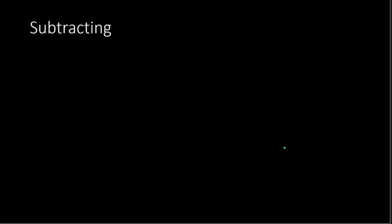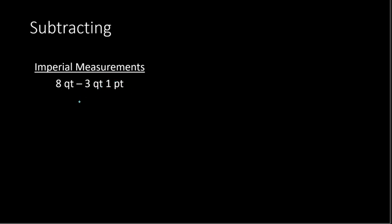Next we're going to work with subtraction. We'll do an example with imperial measurements and then one with metric. For imperial, we're starting with 8 quarts minus 3 quarts 1 pint. With subtraction, we need to subtract like units — quarts with quarts and pints with pints. The problem is we have 0 pints minus 1 pint, which doesn't work right off the bat. So we need to convert one of these quarts into pints. We can think of this as 7 quarts plus 1 quart, which is 8 quarts. Well, 1 quart is 2 pints, so we can rewrite it as 7 quarts 2 pints, minus 3 quarts 1 pint.